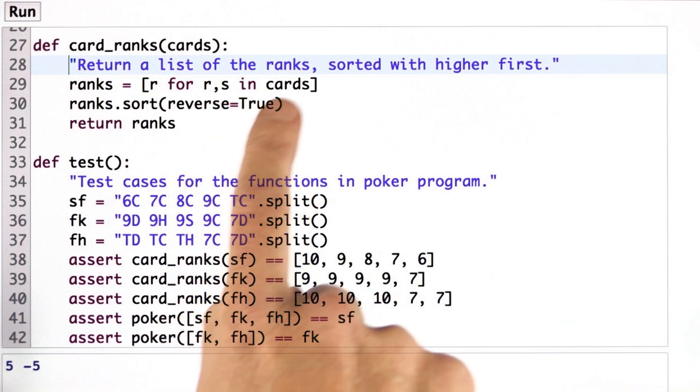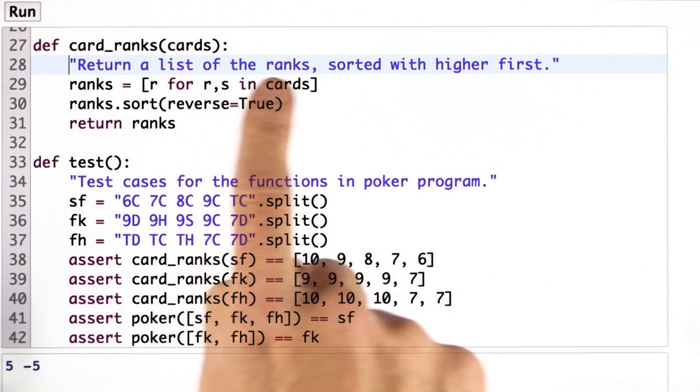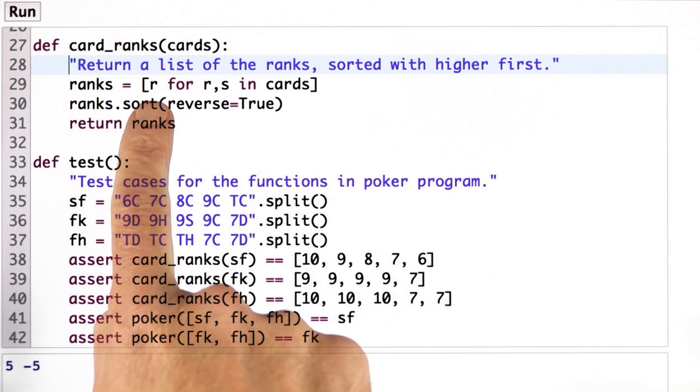And what this is doing is saying each card is a two-value element and we can break down those two elements into the first and second, the one that has index 0 and index 1. And so we're saying a card consists of a rank and a suit, and we're only going to collect up the ranks and make that into a list.